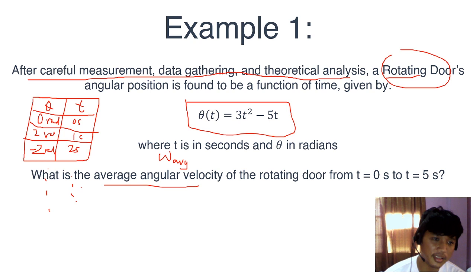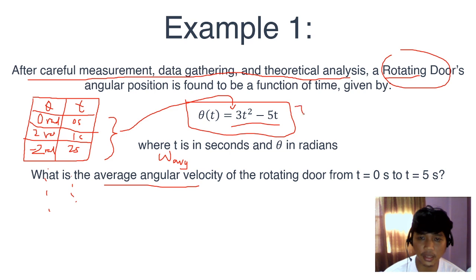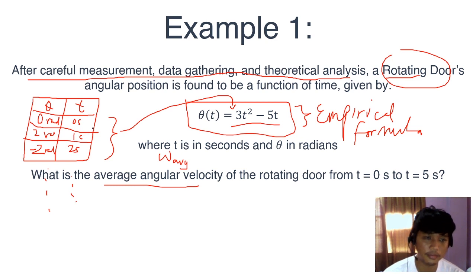He obtained more data. And then, he went home, looked at the data, analyzed the data, and Eureka! I discovered a formula that can describe all of this data and predict future data. He saw that theta actually follows a pattern, 3t squared minus 5t. What an amazing door. I just derived this formula, and whenever you derive formula in this manner, you get data, you analyze the data, and you try to find patterns in the data, you get a formula that is known as an empirical formula. It is a formula that is derived from data that you got from experiments.